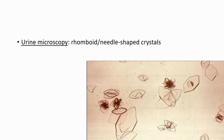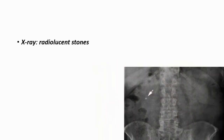In urine microscopy, what you're going to see is rhomboid or needle-shaped crystals — you can see them in this picture. These stones are also radiolucent, meaning they are not visible on X-ray.